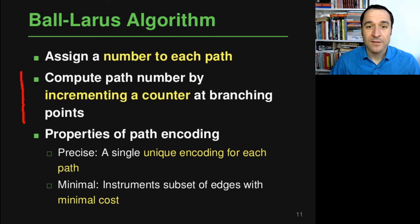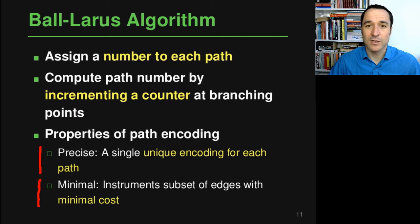This approach has two very nice properties. First, the path encoding is precise, meaning there's a single unique encoding for each path through the graph. Second, it's minimal — the algorithm instruments a subset of edges that imposes minimal cost. So we get a precise path encoding and also have a proof that this imposes the least possible overhead.